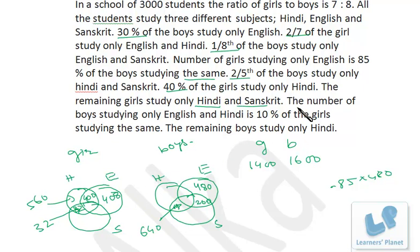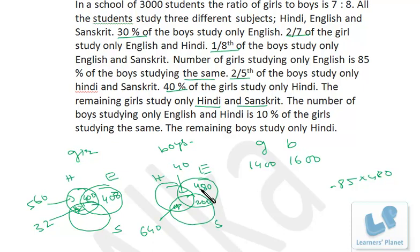The status of the girls is clear. The number of boys studying only English and Hindi is 10% of the girls studying the same. Only English and Hindi for girls is 400, so boys must be 10% of that, which is 40. The remaining boys study only Hindi. Adding up: 480 plus 200 plus 640 plus 40 equals 1360. Out of 1600, deducting 1360 gives 240, and they study only Hindi — so that's 240.